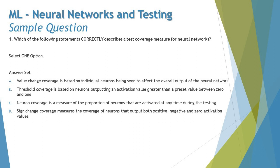Option C says: neuron coverage is a measure of the proportion of neurons that are activated at any time during testing. However, all neurons are potentially activated each time a neural network is run — every single one goes through. The values output by the neurons change, which is what is measured by neuron coverage — coverage greater than zero. Since all neurons are activated, saying only a proportion are activated is not accurate, so option C can be ruled out.